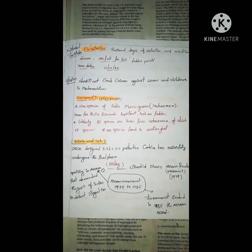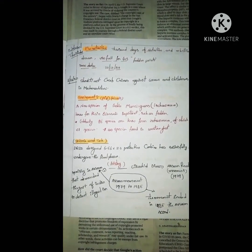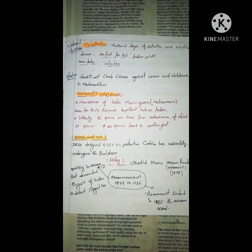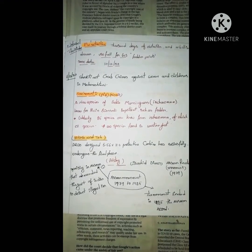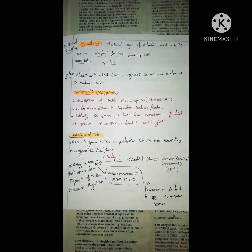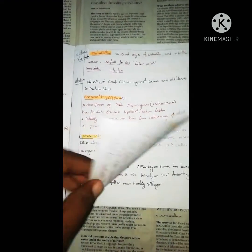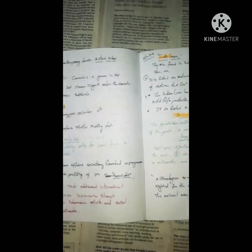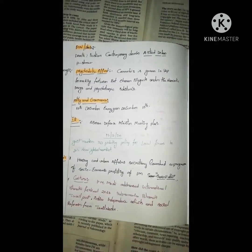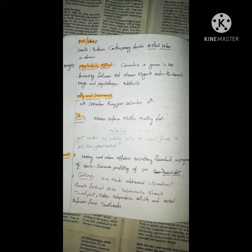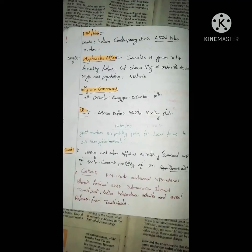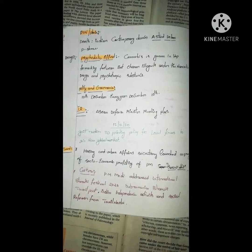Next is environment and science and technology. Then science and tech, followed by PN Gurunchi, drugs, and etc.